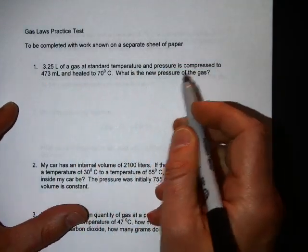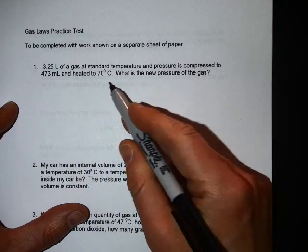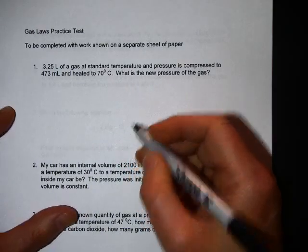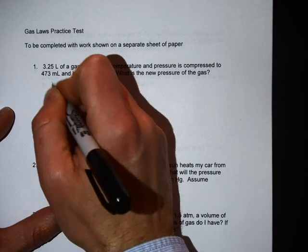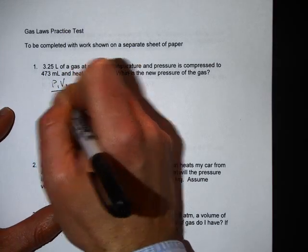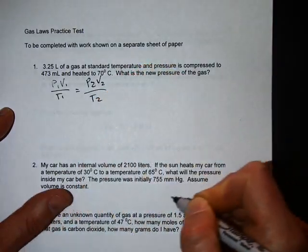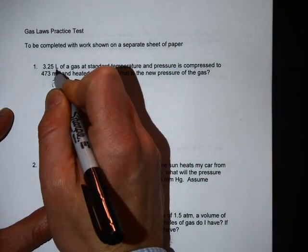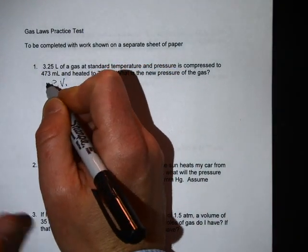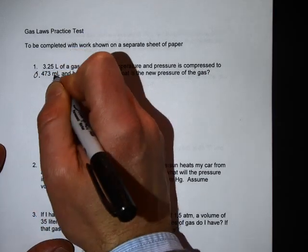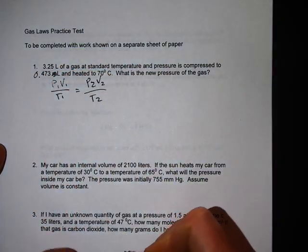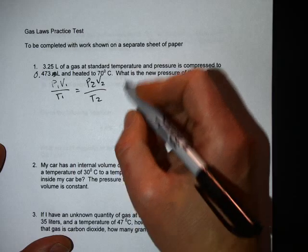This problem is: gas at standard temperature is compressed to a different volume and heated to a different temperature, what's the new pressure of the gas? No mention of moles or grams, so you use the combined gas law and shove your numbers in. These numbers have to match, so liters or milliliters, you got to convert one to the other, so I'll just make this into liters by dividing by a thousand.